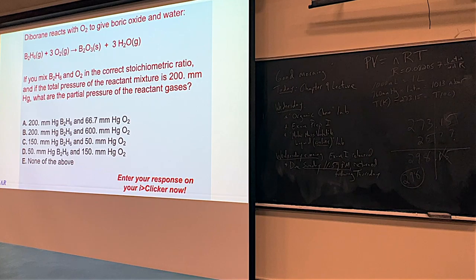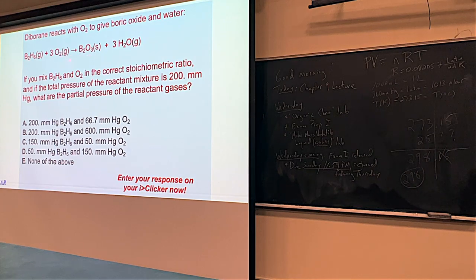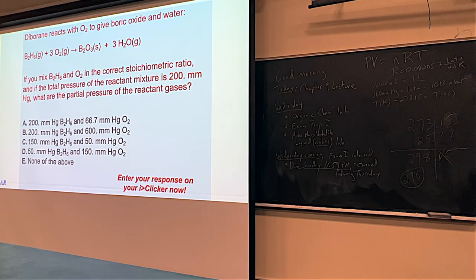Here's a question about Dalton's Law. This compound B₂H₆ — diborane — reacts with oxygen to make boric oxide (B₂O₃, a solid) and water vapor. Notice we have three gases: diborane, oxygen, and water. The boric oxide is a solid, which is important. In this problem, diborane and oxygen are mixed in the correct stoichiometric ratio — for every mole of B₂H₆, we have three moles of oxygen.